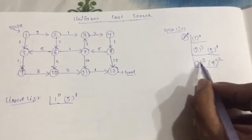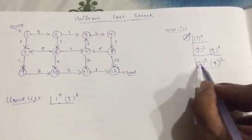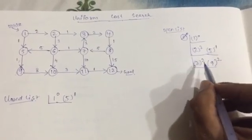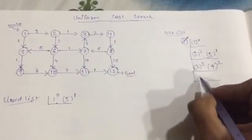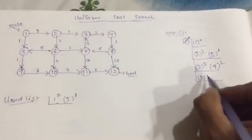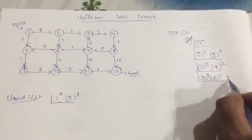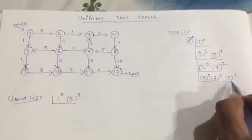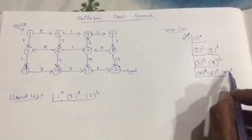These two have the same value, so you can move from node 2 because it came first. Now let's move from node 2 to another values — node 3 and node 6. Node 3 value is 2 plus 1 equals 3, and node 6 is 2 plus 3 equals 5. Also node 9 is still in the open list. Include node 2 in the closed list.